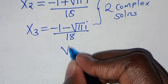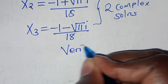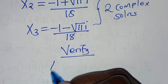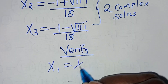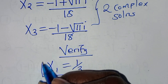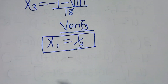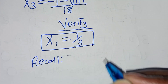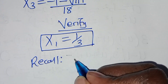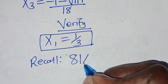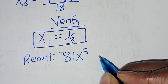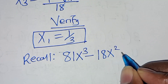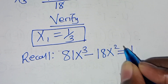The next step is to verify. Let's verify that x₁, which is one third, satisfies the equation. Recall that we have 81x³ subtract 18x² equals 1, so substituting one third should give us a value of 1.